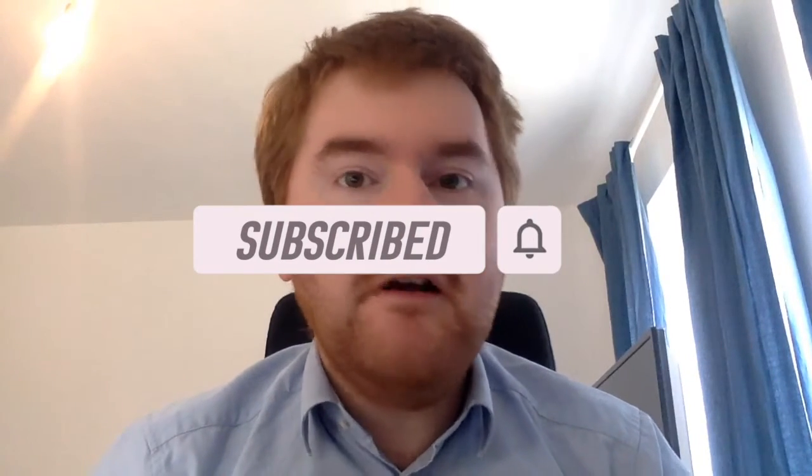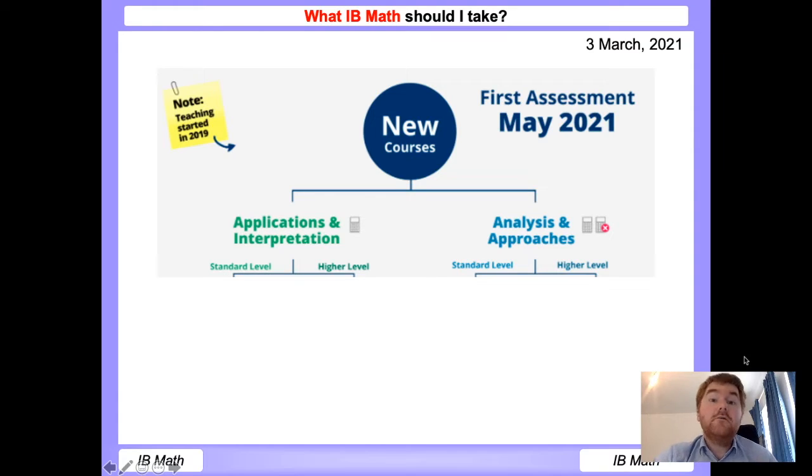Right, let's get started. Let's look at these IB Math courses. So how does IB Math work now from 2019? Well, we have two strands. We have an applications interpretation strand, which is more based on using your GDC, more looking at worded questions and working out what you need to do mathematically. And then we have the more traditional analysis and approaches.